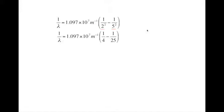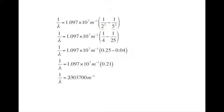We square the 2 and the 5. We take the reciprocal of those, subtract 0.04 from 0.25, and then we multiply that times the Rydberg constant. Now this is not our final answer. We want the wavelength. This allows us to calculate 1 over the wavelength.